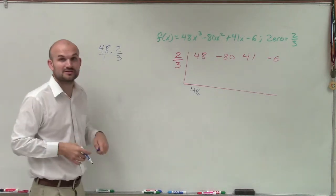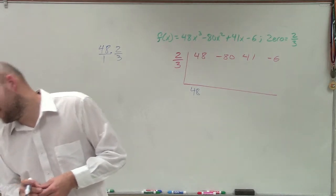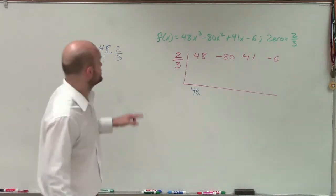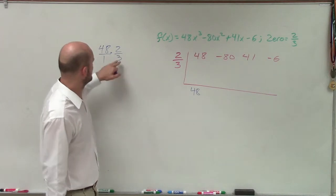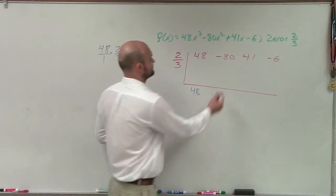Well, 48 divided by 3 is going to be 16. 16 times 2 is going to be... Was that a negative 2-thirds? No, positive 2-thirds. Okay. So 16 times 2 is going to be 32.